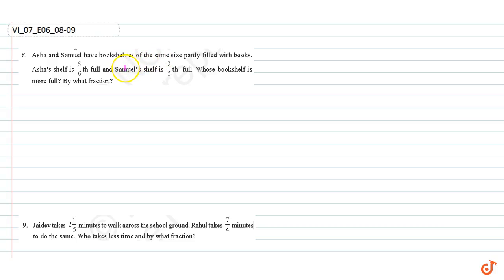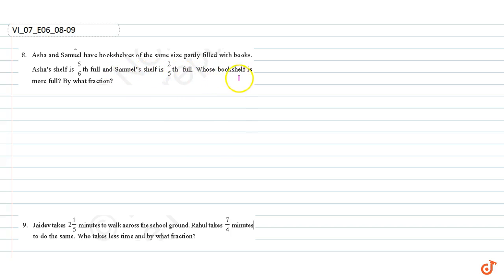In this video we are going to answer question number eight and nine. Question number eight: Asha and Samuel have bookshelves of the same size, partly filled with books. Asha's shelf is five by sixth full and Samuel's shelf is two by fifth full. Whose shelf is more full and by what fraction?